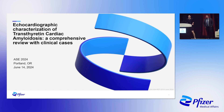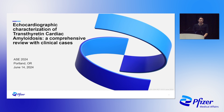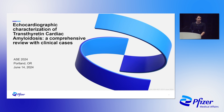My name is Sarah Cuddy. I'm a cardiologist at Brigham and Women's Hospital in Boston. My specialty is really just in cardiac amyloidosis — that's where I see patients uniquely with this disorder. I'm also a multi-modality imager, trained in all modalities: MRI, CT, nuclear, and echo. Most of my clinical and research work has been in echo, MRI, and some nuclear.